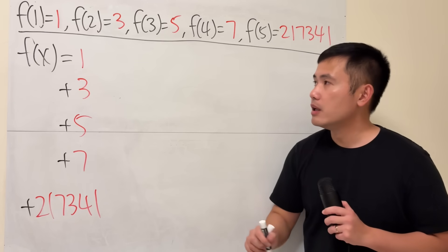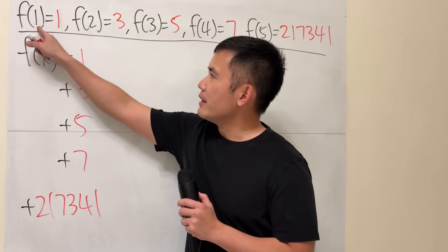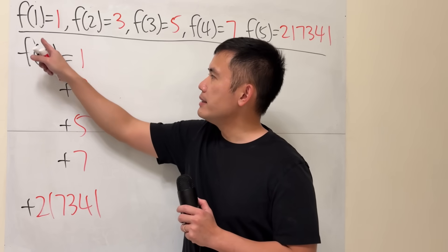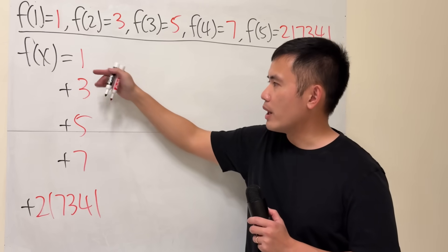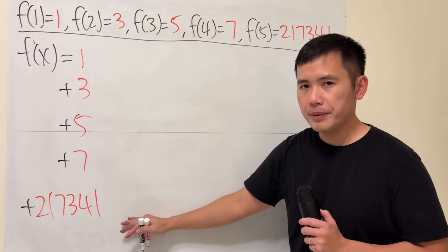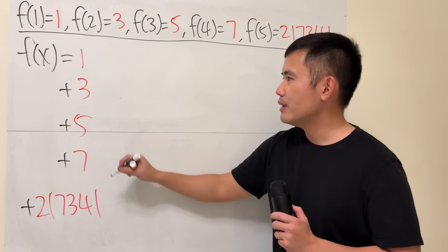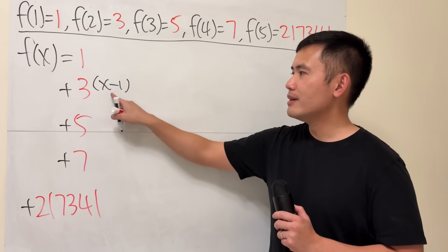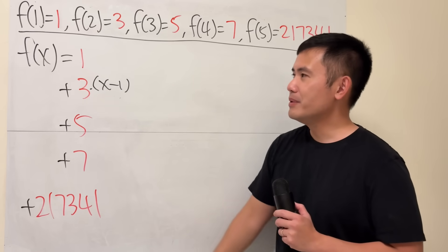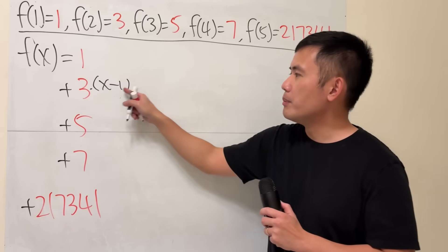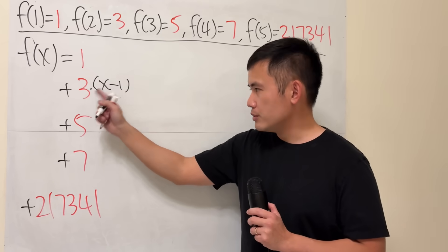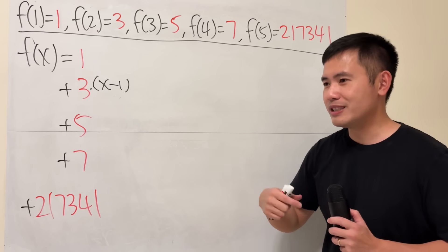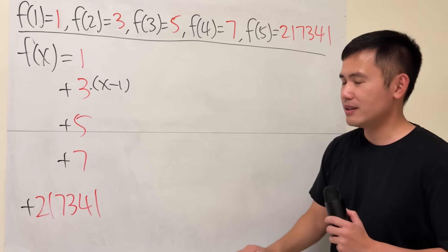Now, let's think about it. When f(1) is equal to 1, that means when x is 1, you put it in and you just want to get 1 — you don't want any of the others. How can we make that happen? All we need is to multiply by (x − 1). When you put 1 in, 1 minus 1 is 0, and 0 times anything is 0. So let's do the same thing for the others — multiply by (x − 1) here, here, and here.